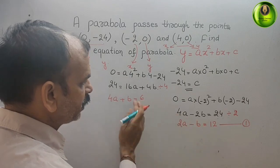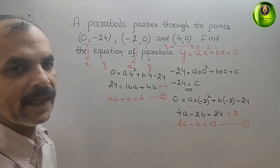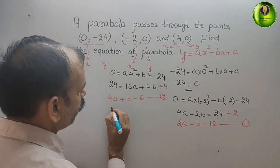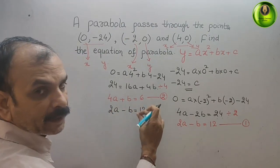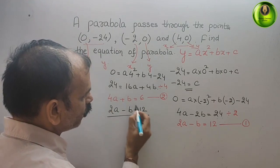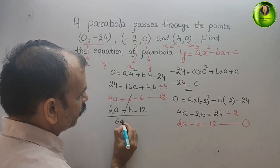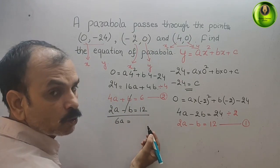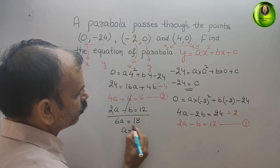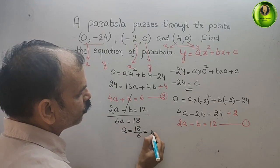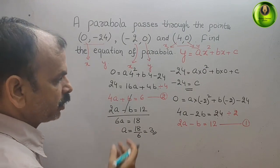Bringing both equations together: 2a - b = 12 and 4a + b = 6. Adding them, b cancels out. We get 4a + 2a = 6a, equal to 6 + 12 = 18. So 6a = 18.